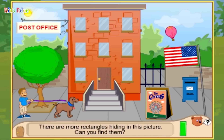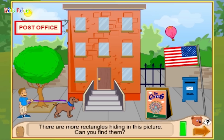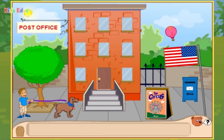Can you find them? The sign is a rectangle. The flag is a rectangle. The front of the step is a rectangle. The sign is a rectangle. You did a great job finding rectangles.